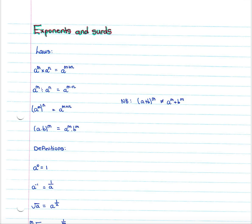If you have two variables with exponents and you multiply them together, your exponents get added. So if you had x squared times x cubed it would be x to the five, because three plus two is five. If you have two variables with exponents divided by each other, the result is the top variable's exponent minus the bottom variable's exponent.